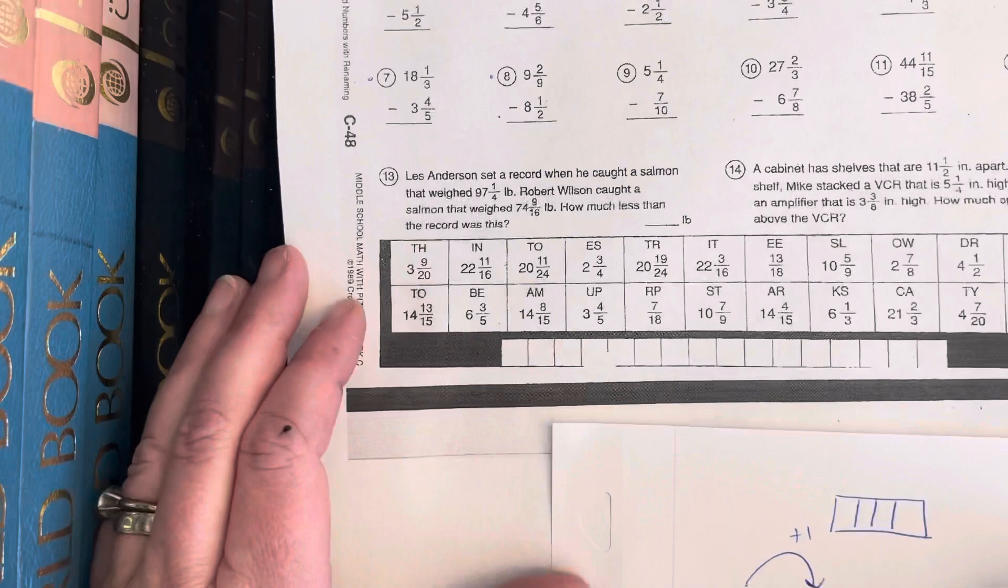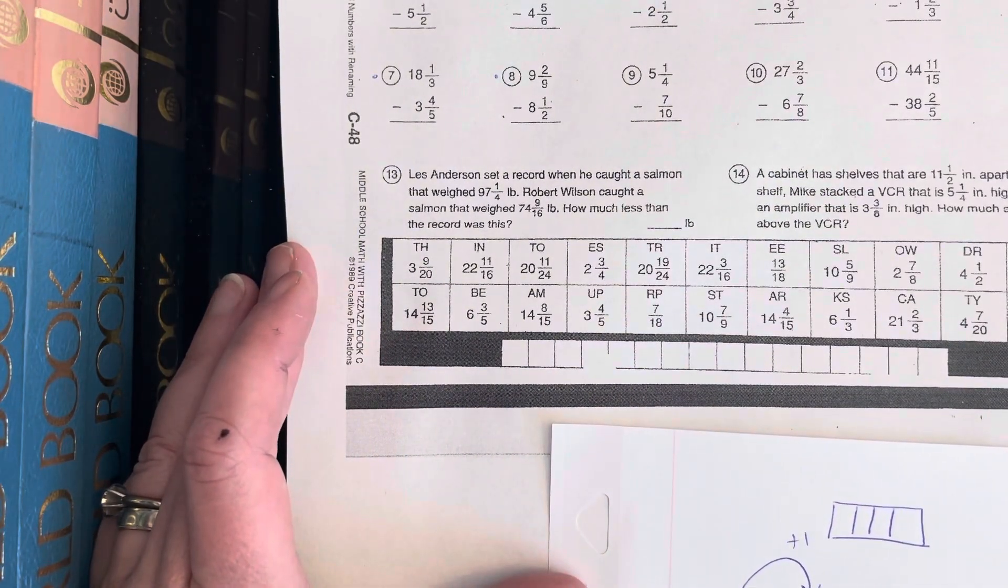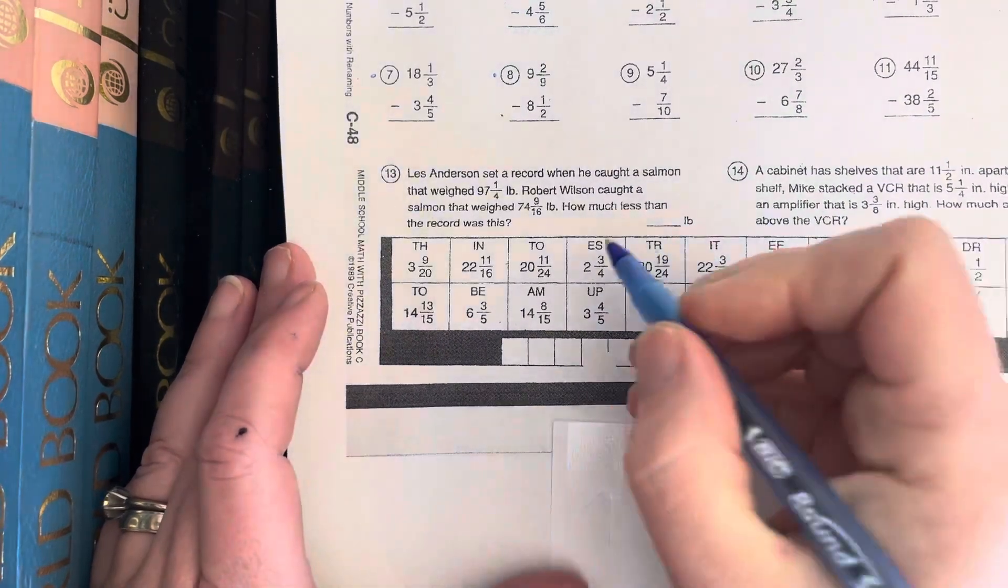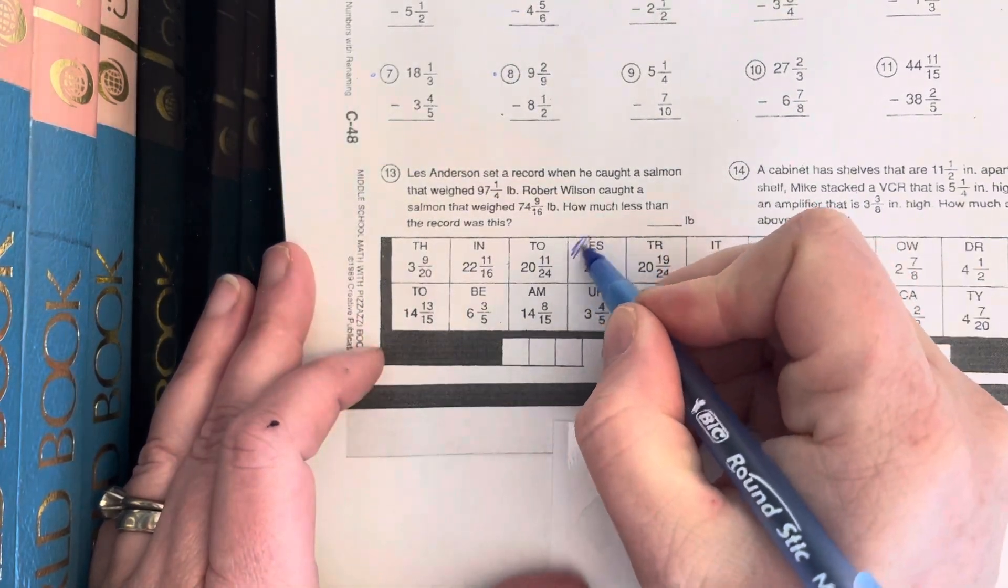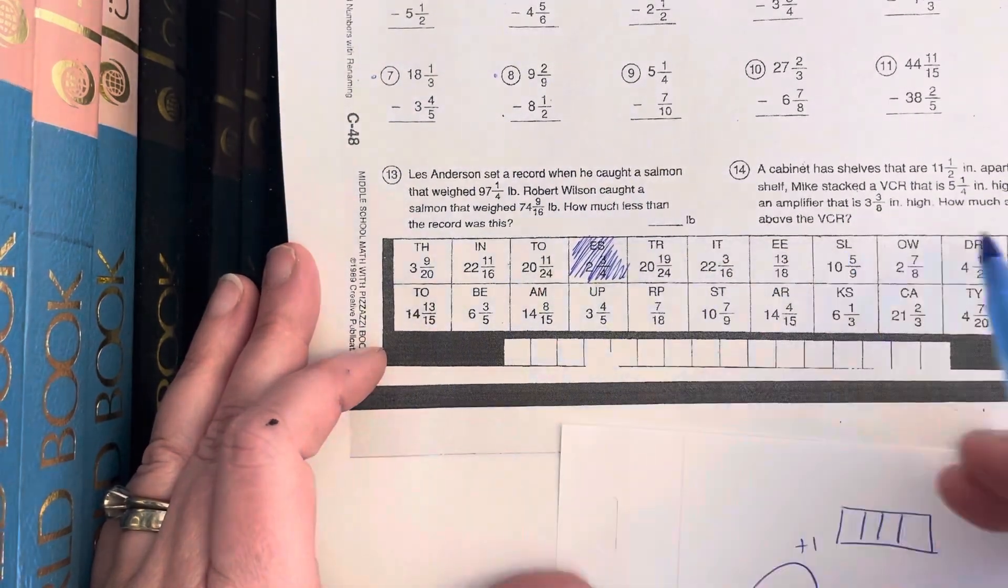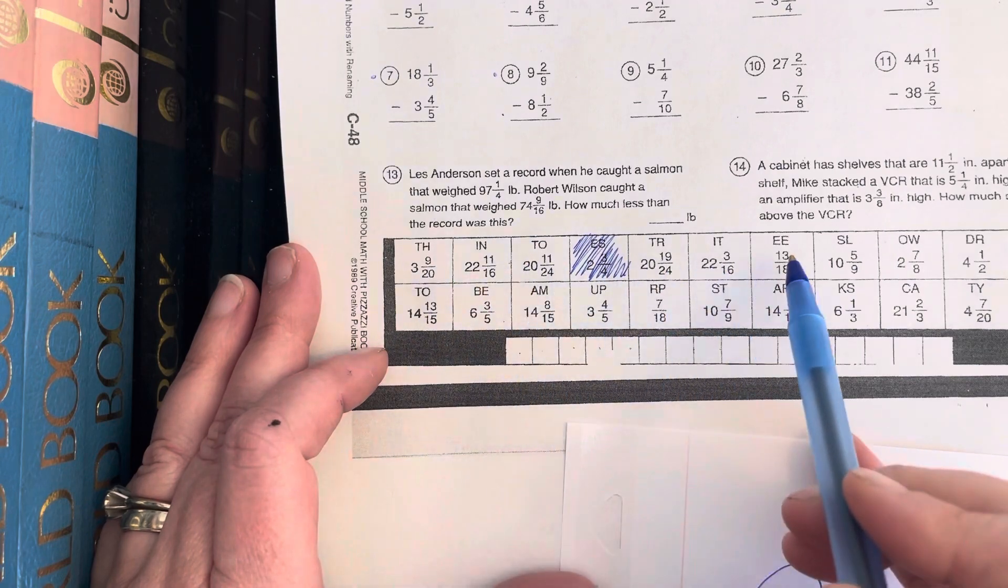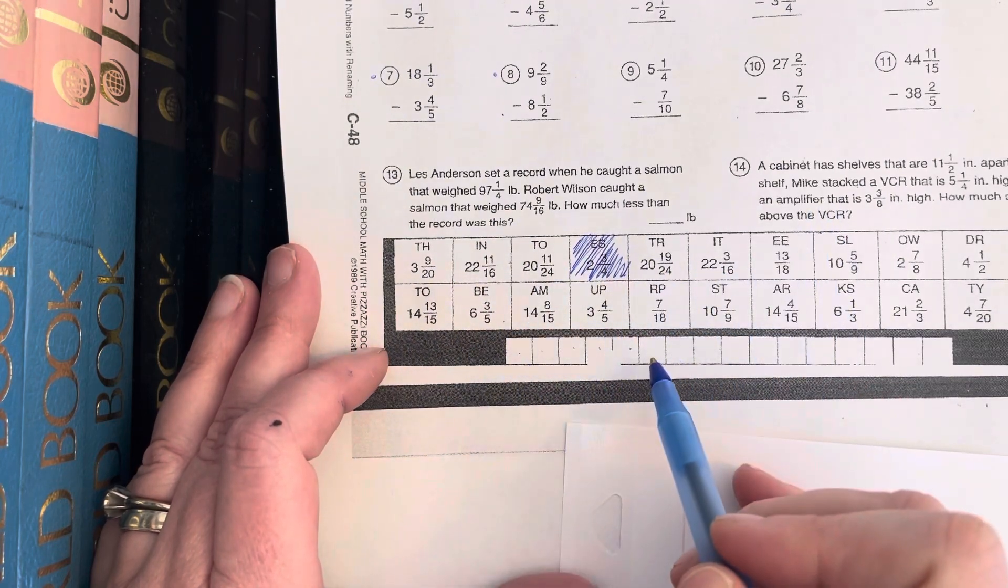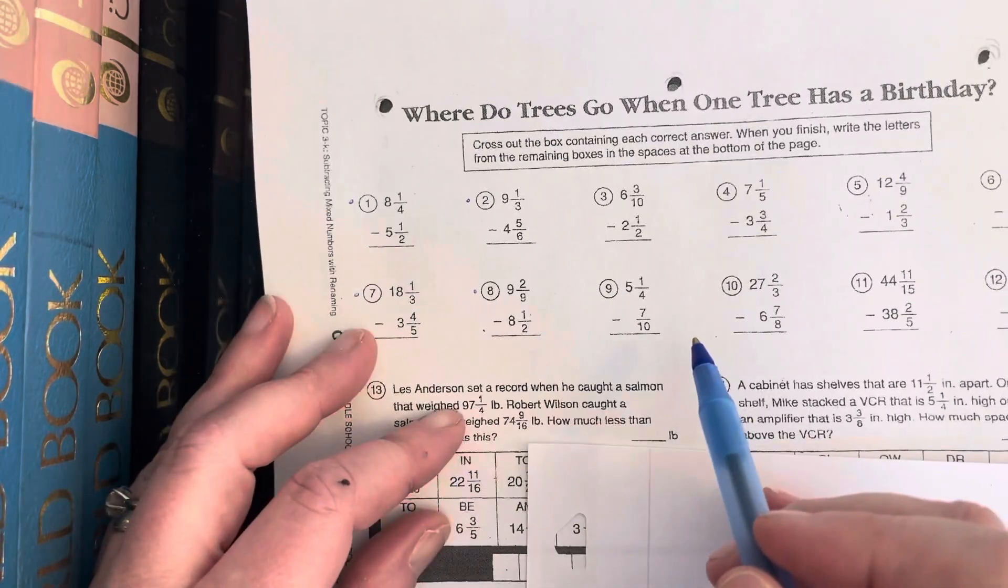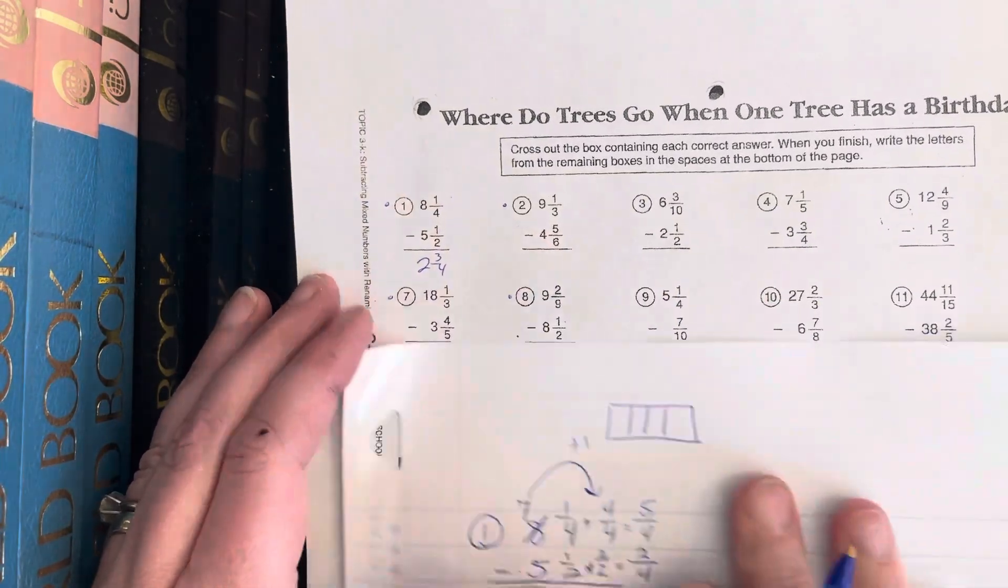Down here at the bottom, I need to find 2 and 3/4 to make sure that I got this answer correct. You guys are always faster at finding this than me. Here it is. So the directions tell me just to cross off this box. In the end, whatever letters are left over, I'm going to fill into these boxes in the order that they appear, and that's going to tell me the answer to where do trees go when one tree has a birthday.